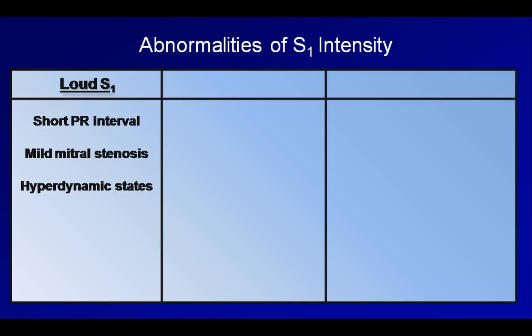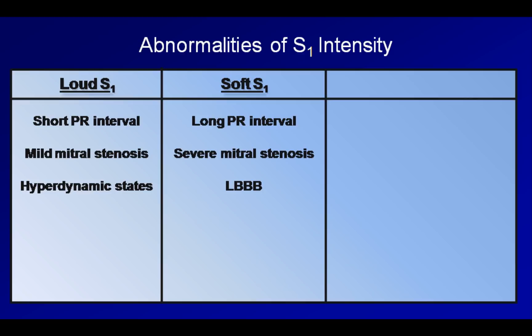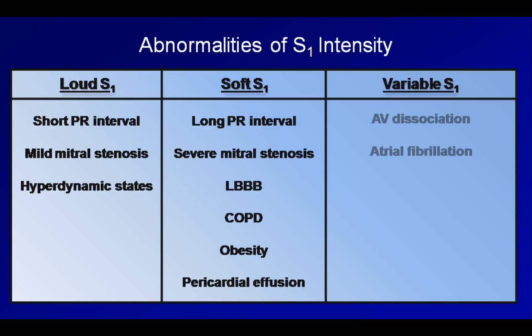Next is a soft S1. This can be caused by a long PR interval, severe mitral stenosis where the mitral valves are calcified and stiff, and a left bundle branch block. In addition, any pathology that interferes with transmission of sound from the heart through the chest wall will also lead to a soft S1. This includes COPD, obesity, and a pericardial effusion. Finally, is a variable S1. This can be caused by AV dissociation, where a variable relationship between LV and LA pressures leads to variable speeds of mitral valve closure.